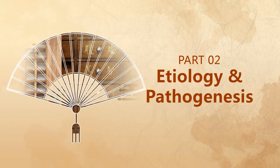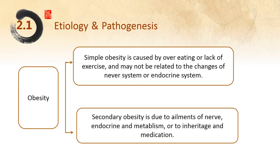The next part is etiology and pathogenesis of obesity. Simple obesity is caused by overeating or lack of exercise and may not be related to changes of the nervous system and endocrine system. Secondary obesity is due to ailments of the nerve, endocrine, and metabolism, or to inherited and other conditions.